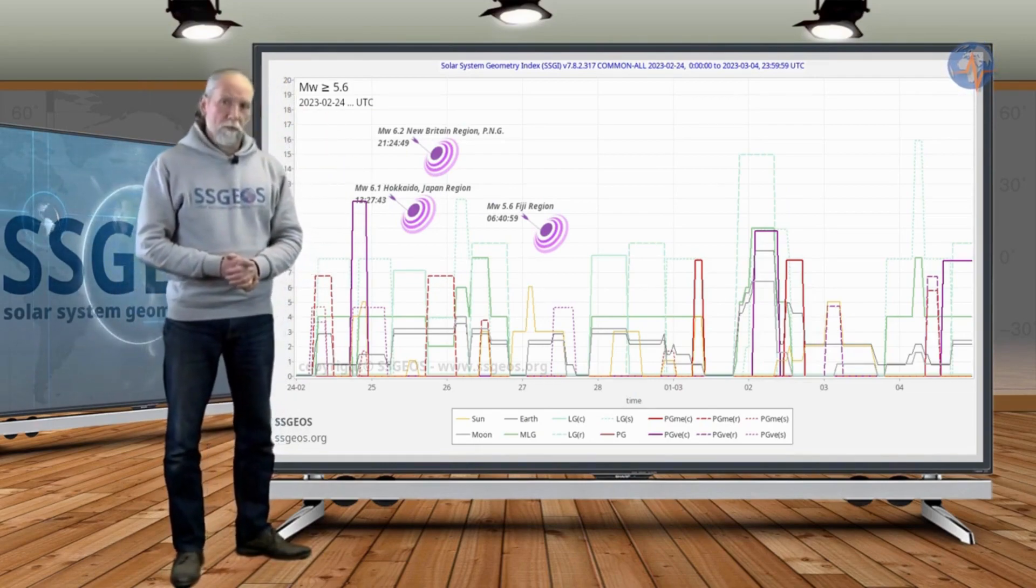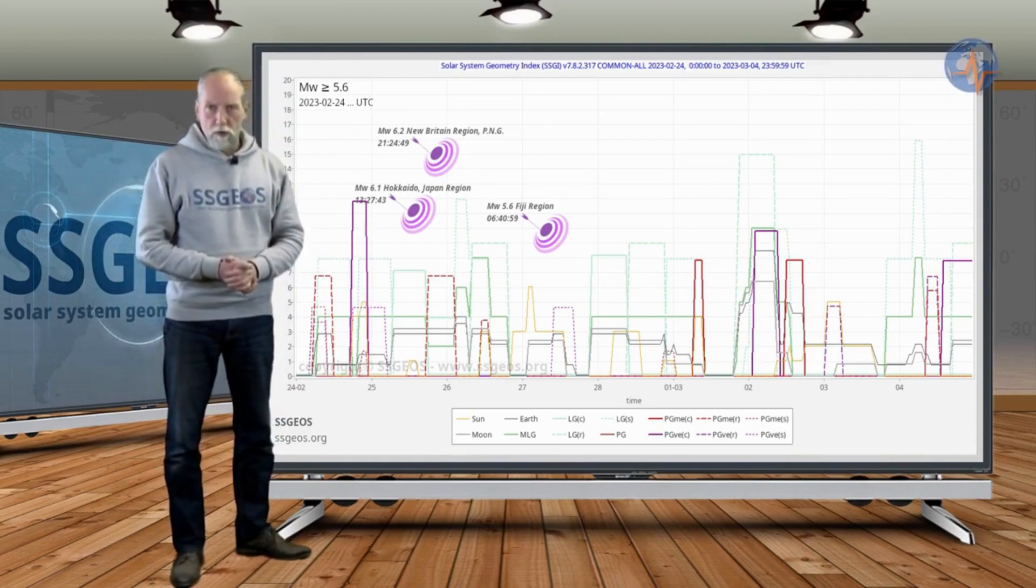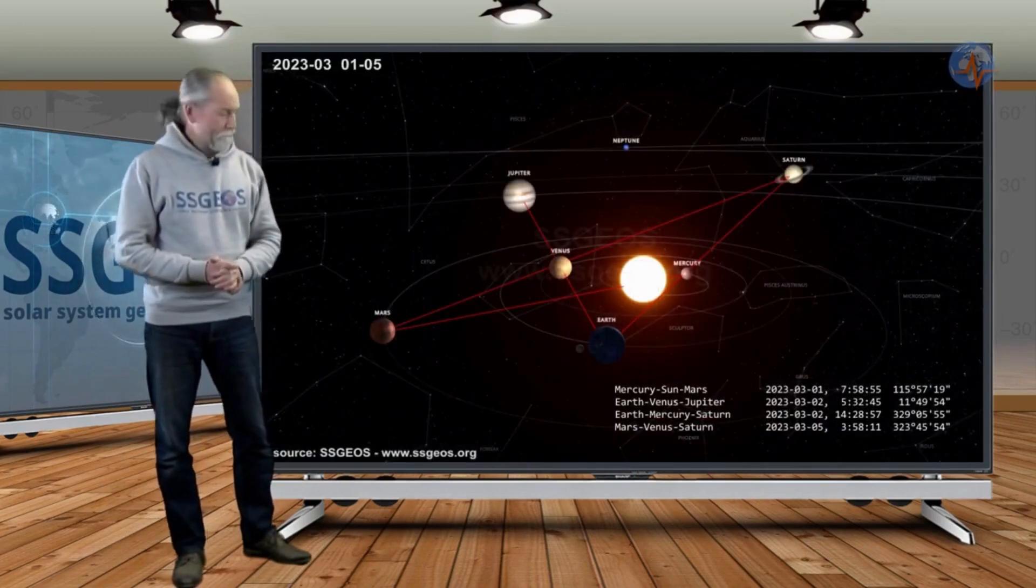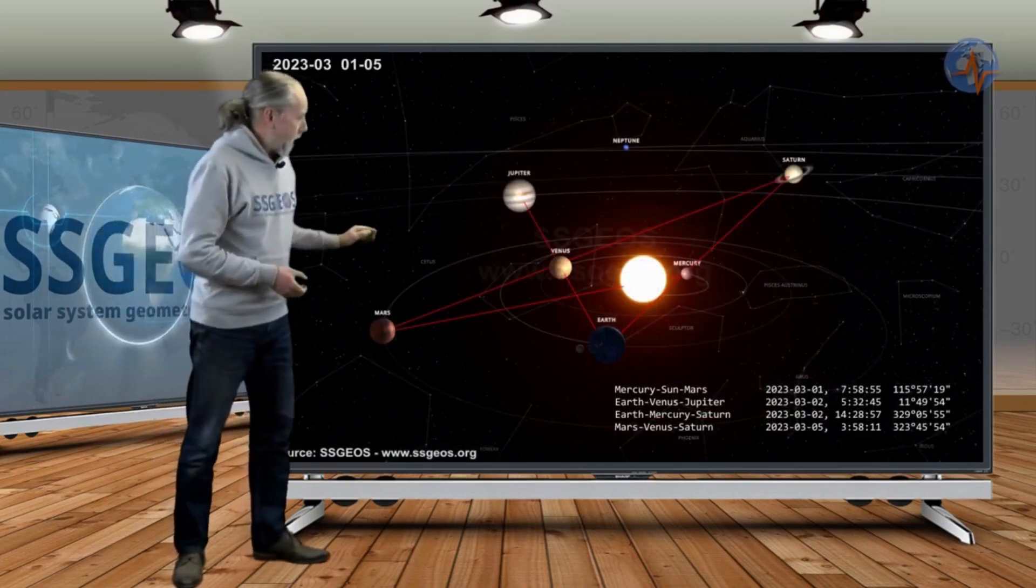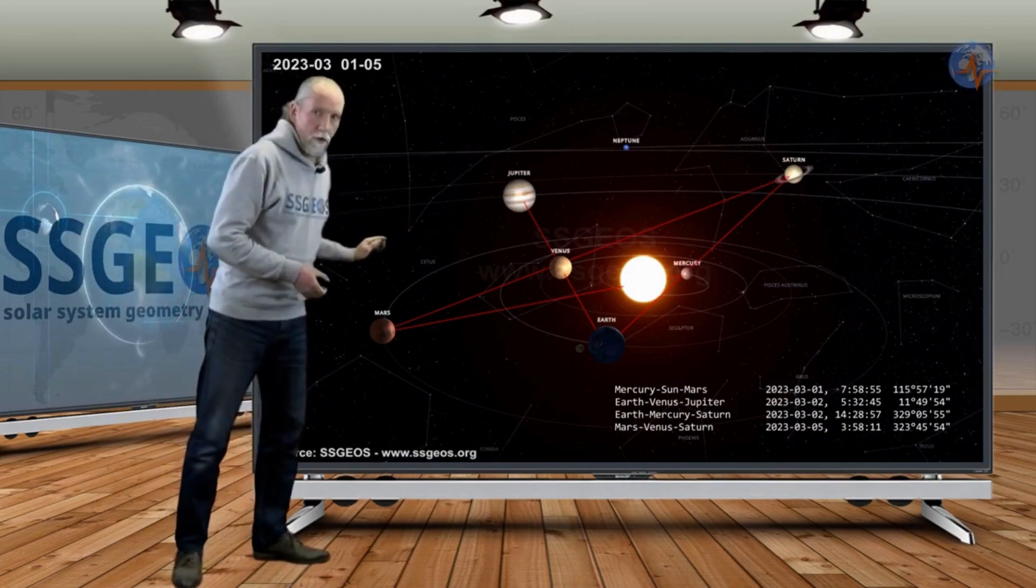If an earthquake happens to occur that remotely fits their prediction, they claim success, even though one or more of their predicted elements is wildly different from what actually occurred.